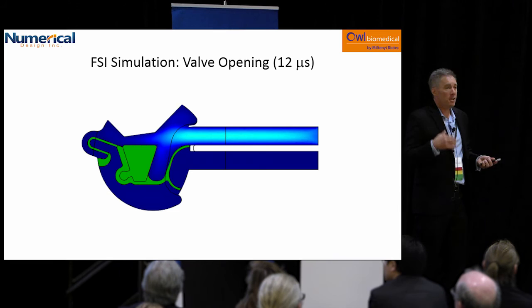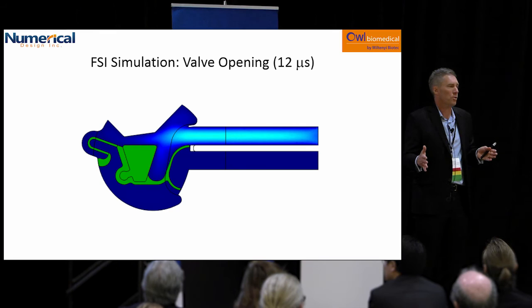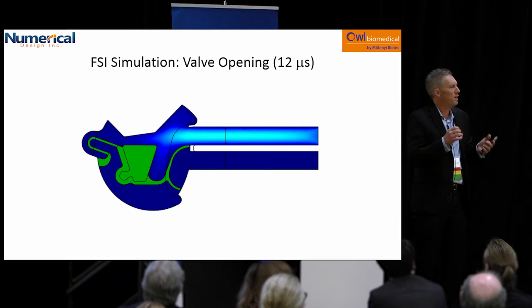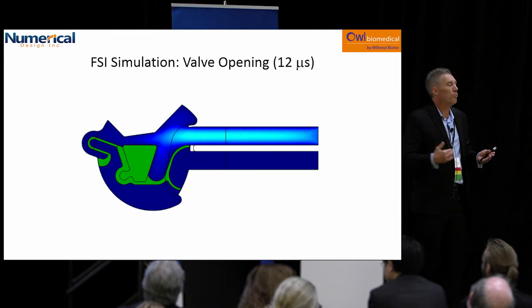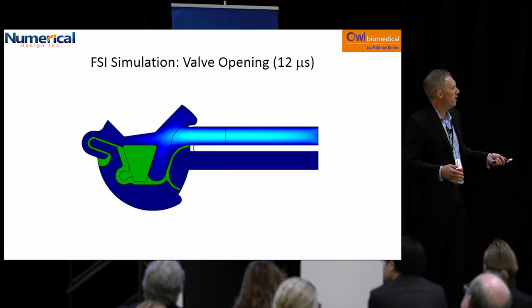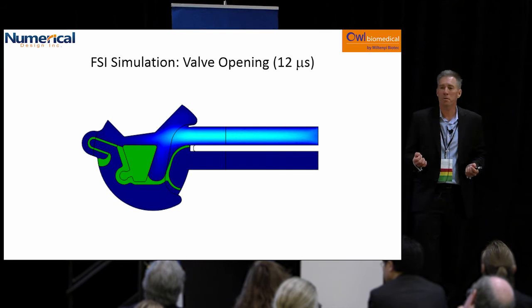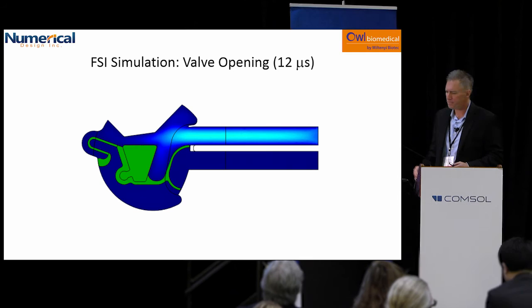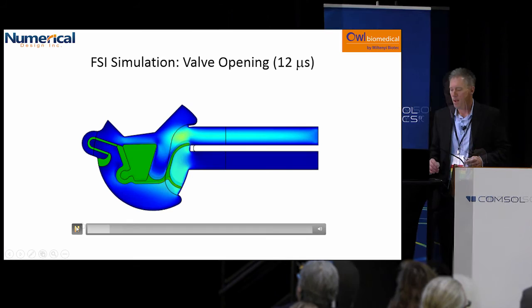Making these valves takes a long time through the foundry process and is very expensive — each fab run is quite expensive with a lot of lead time. If you can design on the computer and iterate many designs, identify the four or five you like most, lay those out on the mask, build them and try them, it really improves the design cycle. Furthermore, because this is so small — smaller than a human hair — with speeds like a meter per second, it's very hard to measure experimentally. The only way to really visualize what's going on is through numerical simulation. COMSOL is just an invaluable tool for this process.